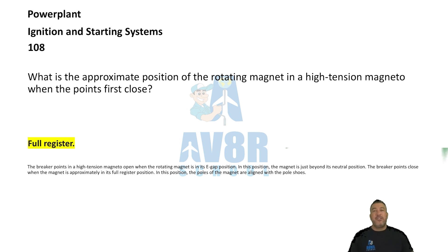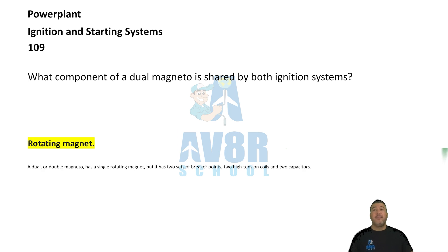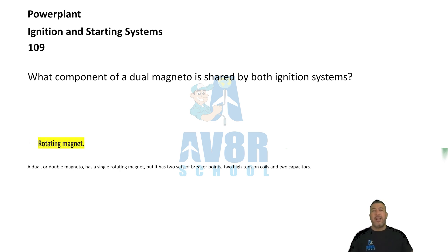Number 109. What component of a dual magneto is shared by both ignition systems? The answer is a rotating magnet. The rotating magnet is the component shared by both ignition systems in a dual magneto.